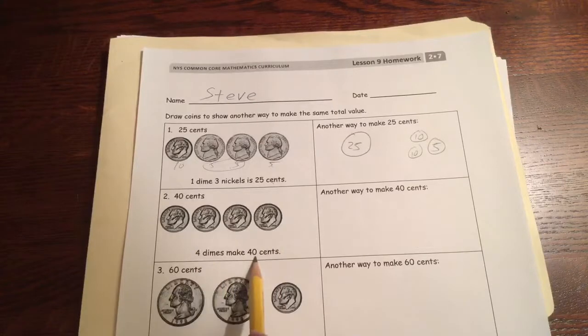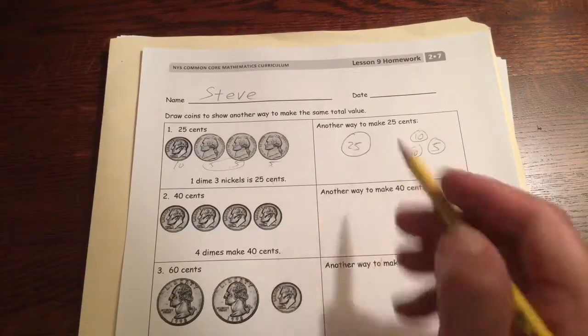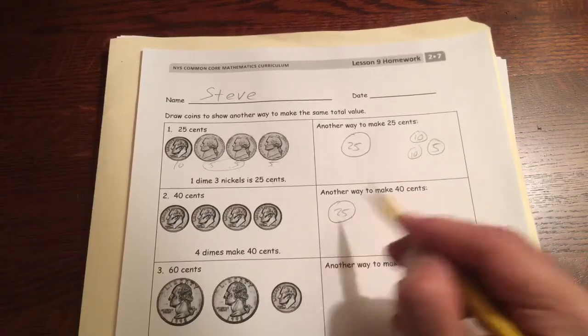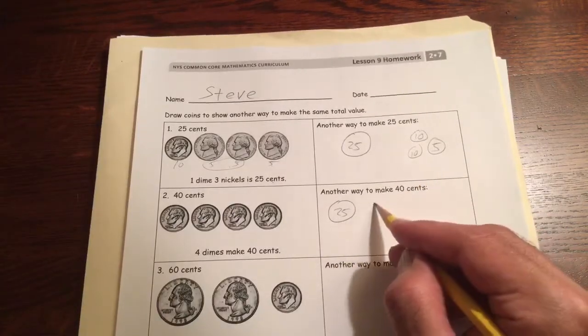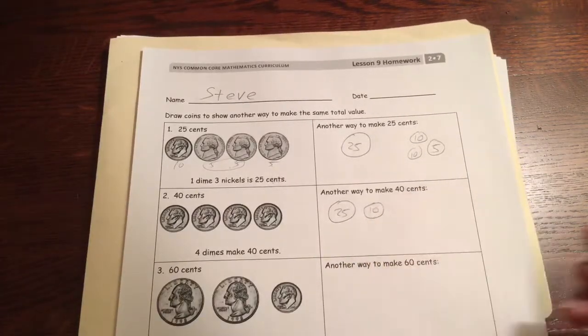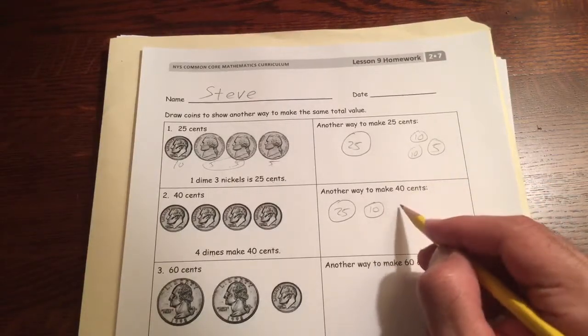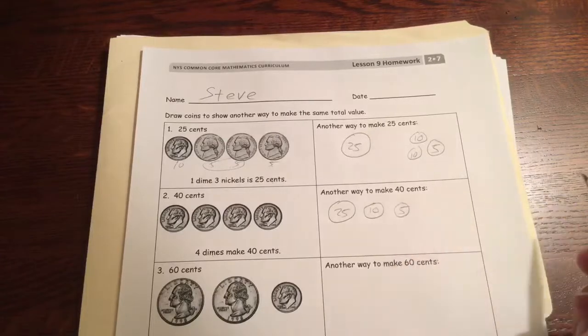40 cents. Four dimes make 40 cents. Another way to make 40 cents, you could do with a quarter. 25, a dime, 35, and now I just need five more cents. There's 40 cents.